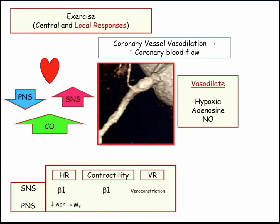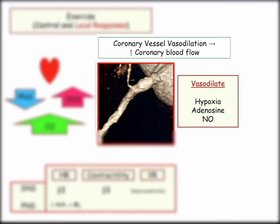We have to increase blood flow — first and foremost — to the coronary vessels to keep up while we exercise. How are we going to get increased coronary blood flow? The vessels have to vasodilate. What's causing them to vasodilate? Local responses. Adenosine and nitric oxide are going to cause coronary vessel vasodilation during exercise.